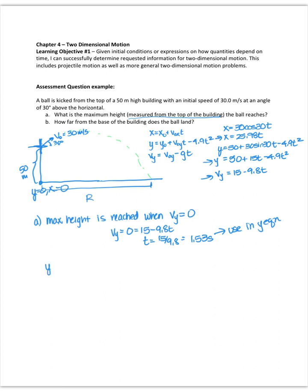So y at 1.53 seconds would be 50 plus 15 times 1.53 minus 4.9 times 1.53 squared. If I calculate that all out, I'll get 61.5 meters.